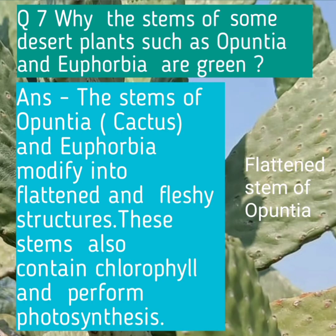Question number seven: Why are the stems of some desert plants such as Opuntia and Euphorbia green? Answer: The stems of Opuntia, which is a cactus, and Euphorbia are modified into flattened and fleshy structures. These stems also contain chlorophyll and perform photosynthesis, as the leaves are small, spiny, or absent in these plants.